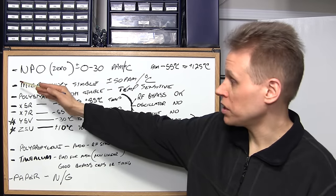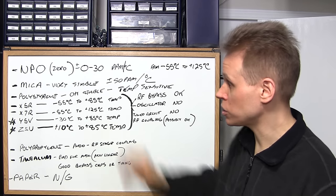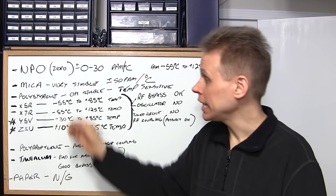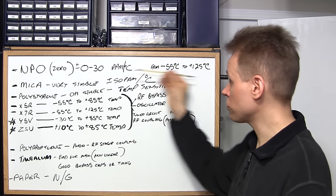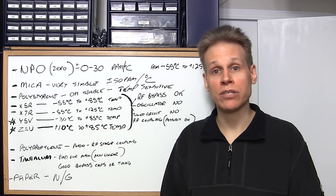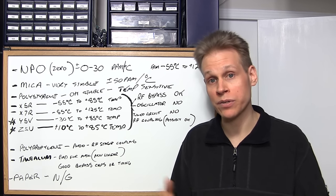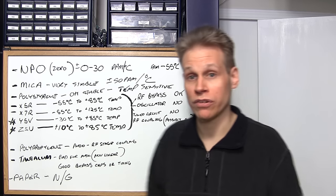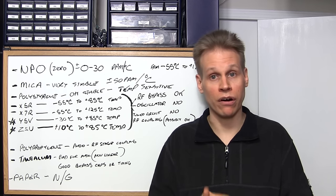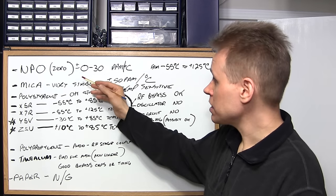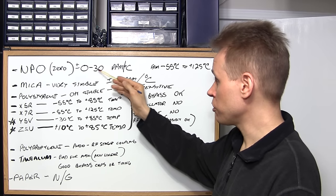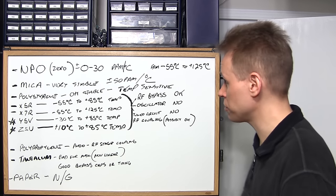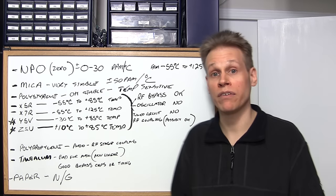The first capacitor on the board is the NP0 style — a lot of people say NPO, but it's actually NP0 or C0G, which stands for negative positive zero. These are extremely stable capacitors. You'll find them in crystal oscillators, variable frequency oscillators, beat frequency oscillators, and RF coupling circuits — basically anywhere the circuitry is RF related. The capacitance movement with temperature is positive/negative 0 to 30 parts per million per degree C, with a usable temperature range of -55°C to +125°C — quite a wide, very stable range.